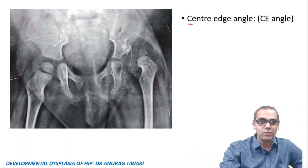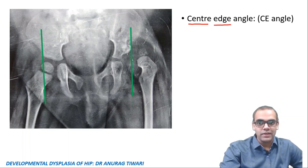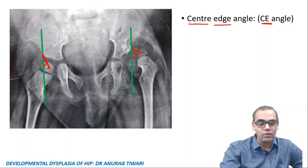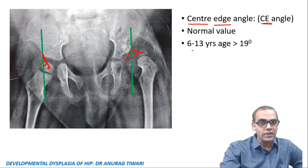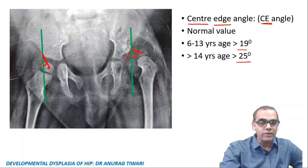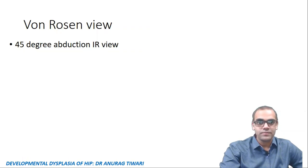The center edge (CE) angle is drawn from the center of the femoral head to the edge of the acetabulum, measured relative to Perkin's line. On the affected side in DDH, this angle crosses from the medial to the lateral side (abnormal). Normal values: more than 19 degrees from 6–13 years of age, and more than 25 degrees from 14 years onwards. Any decrease or reversal is suggestive of DDH.